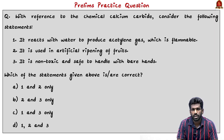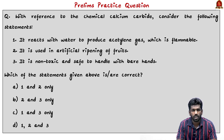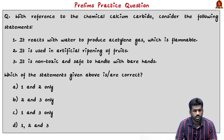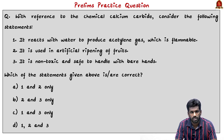For the prelims practice question on calcium carbide: it reacts with water to produce acetylene gas, which is flammable; and it is used in artificial ripening of fruits — both correct. The third statement, that it is non-toxic and safe to handle with bare hands, is incorrect because it is a toxic substance. The correct answer is option A — statements 1 and 2 only.